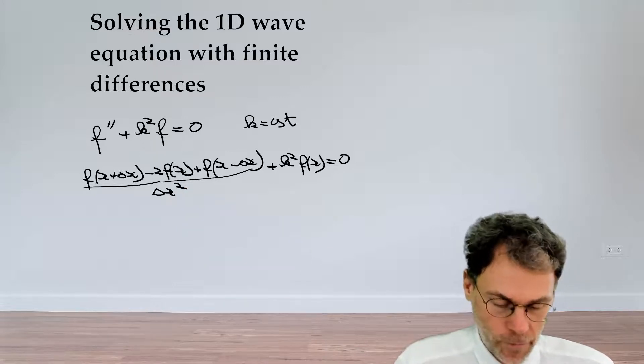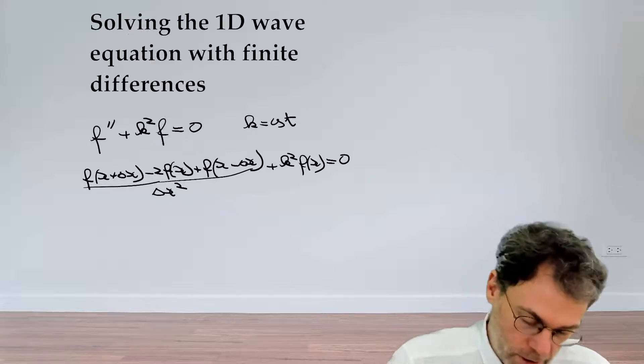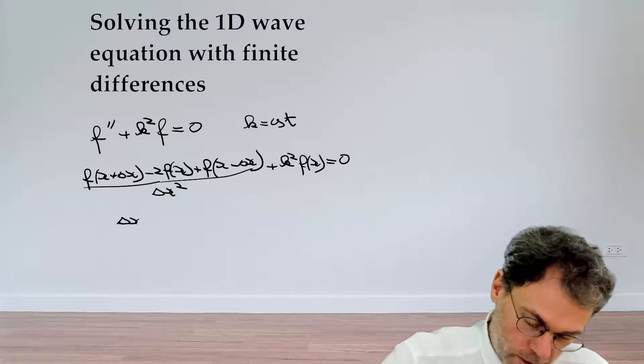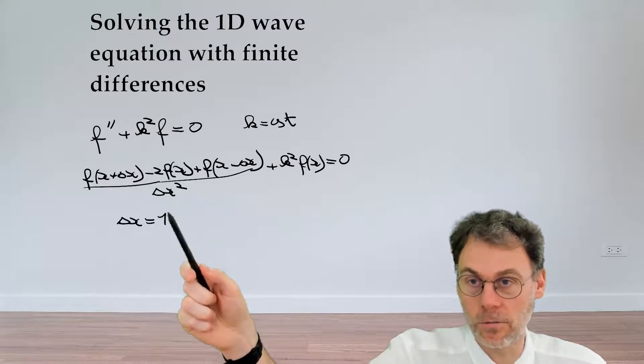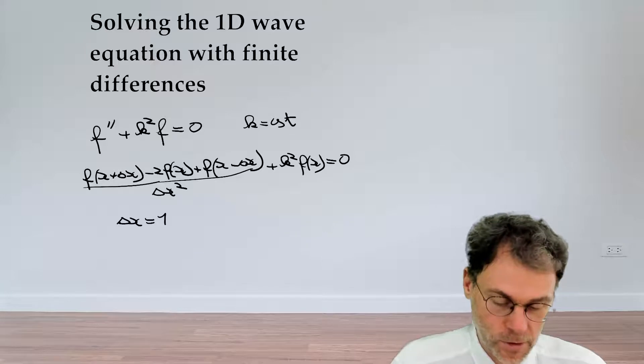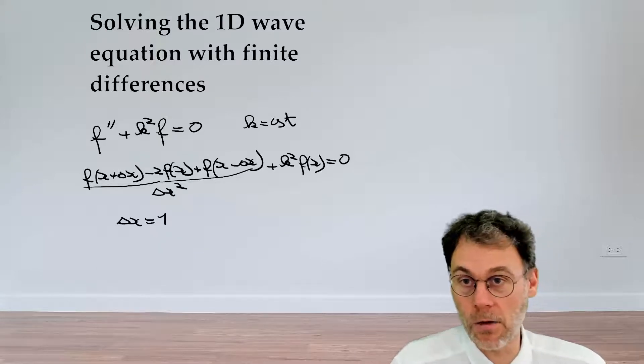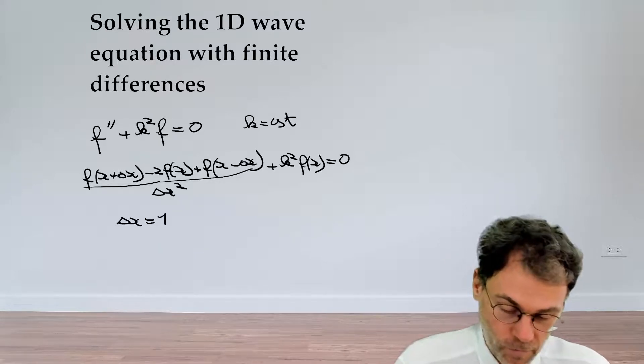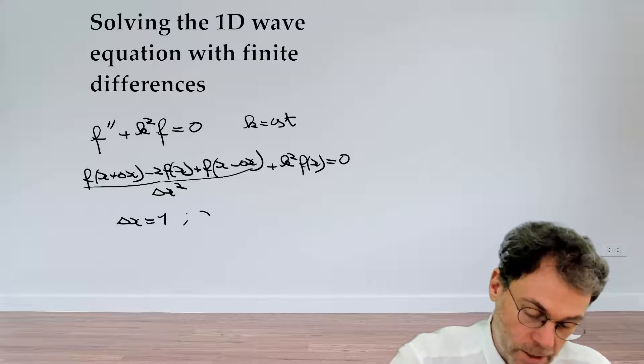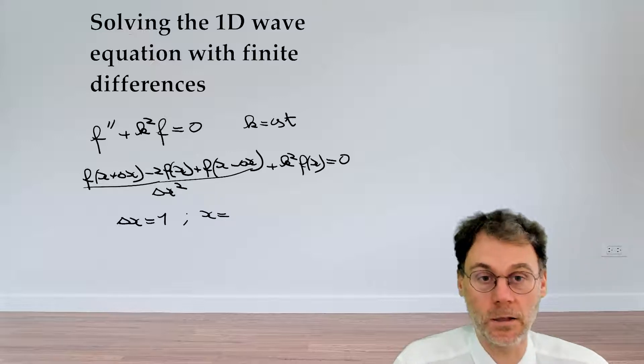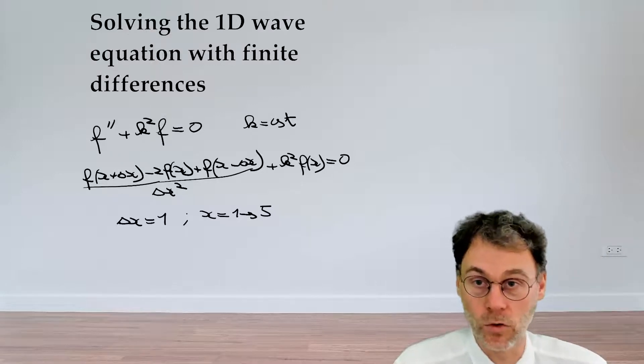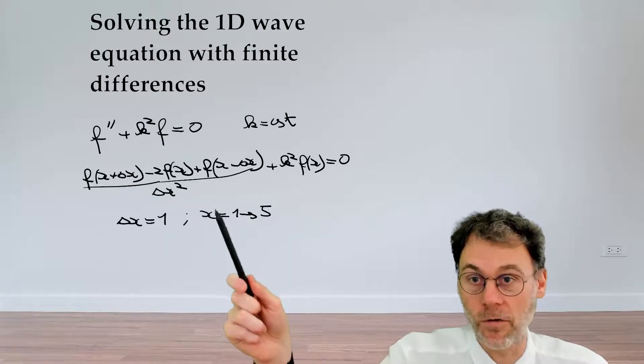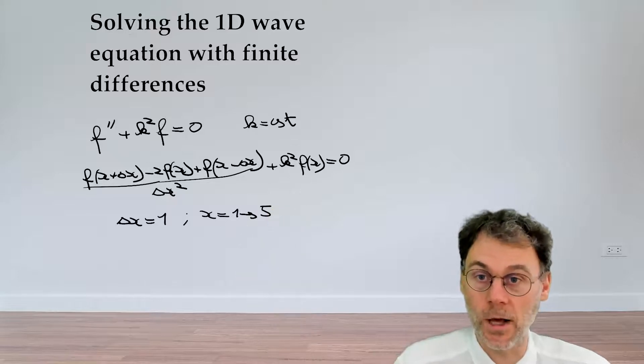Let's make our life even more easy by saying that delta x is equal to 1. So then I don't need to write that denominator here because I'm a very lazy person. And let's also say, okay, let's calculate the following values. Let's say we're interested in the fields at the points x equal to 1 up to and including x equal to 5. So these are the five field values that we need to calculate.